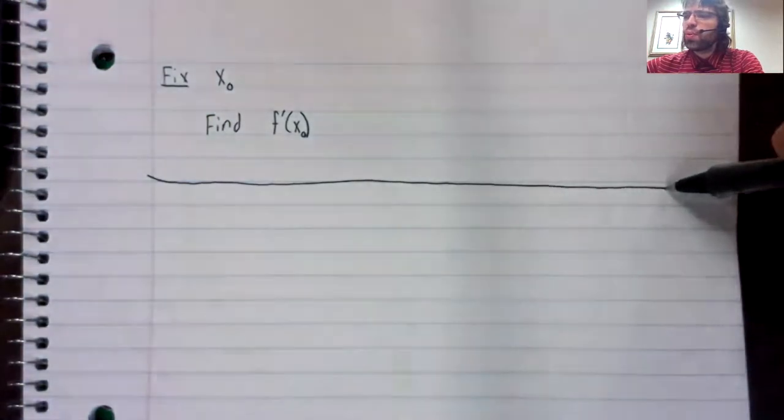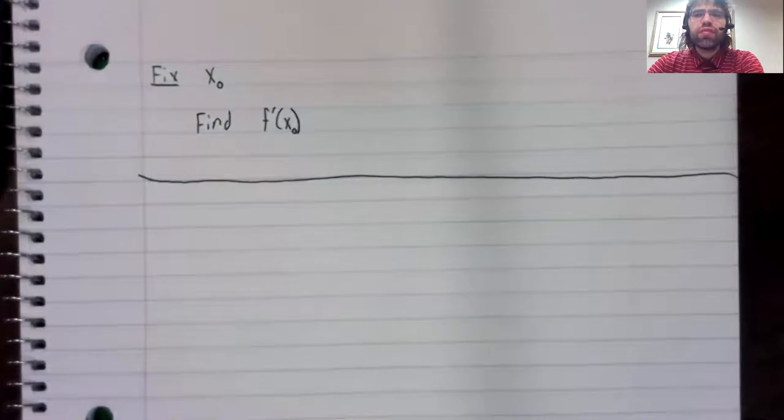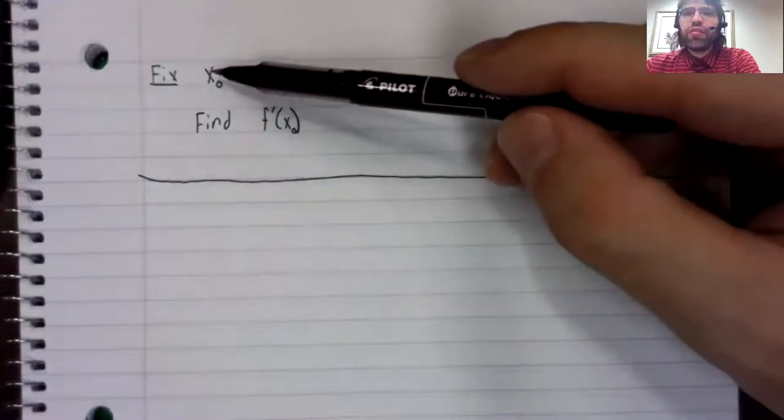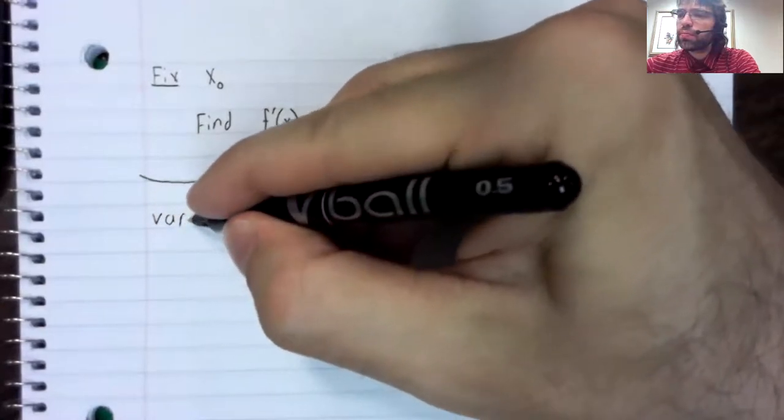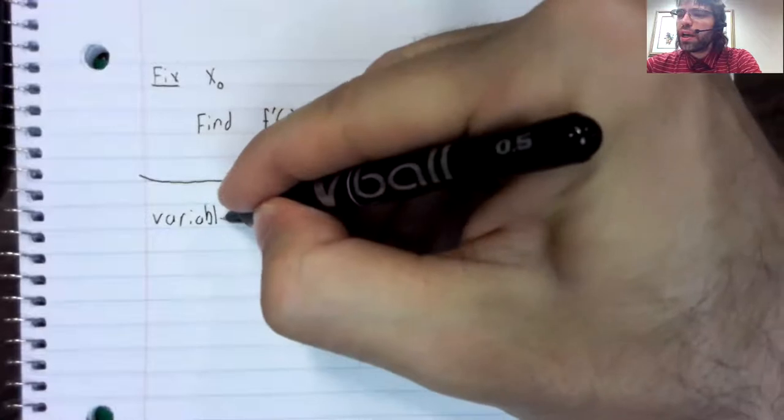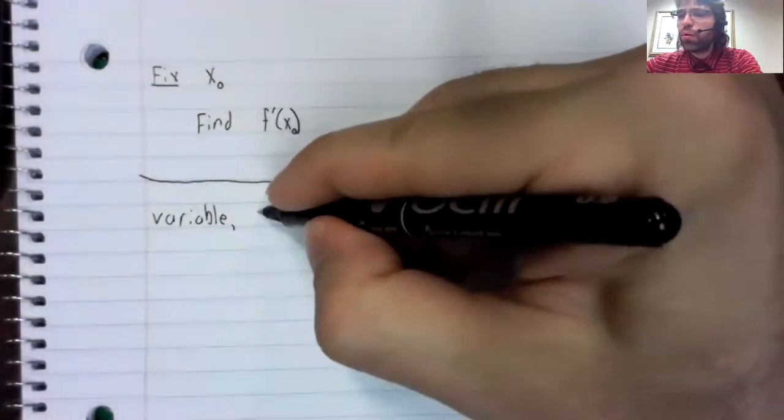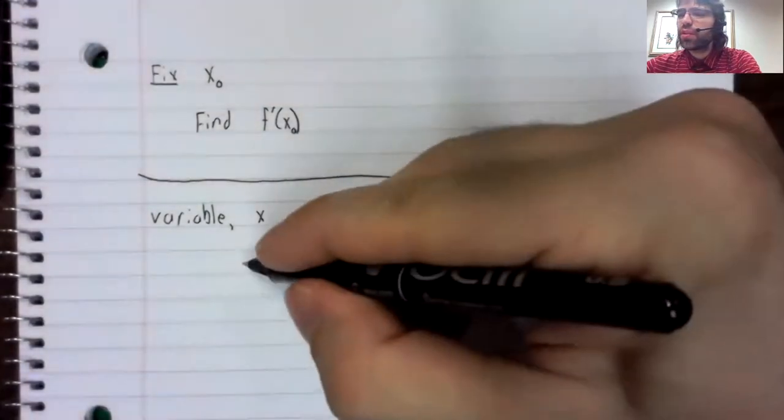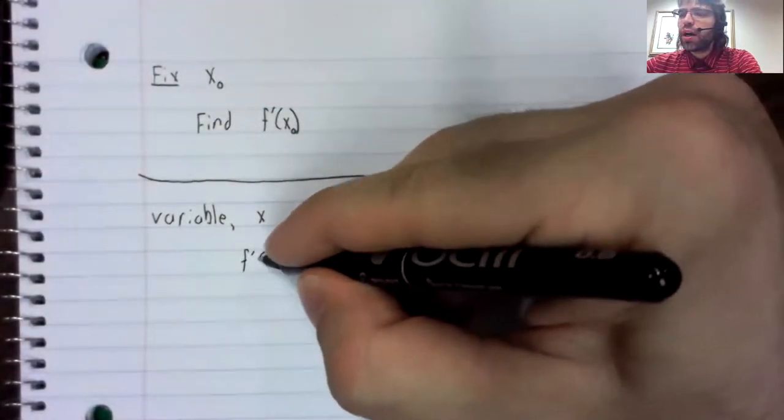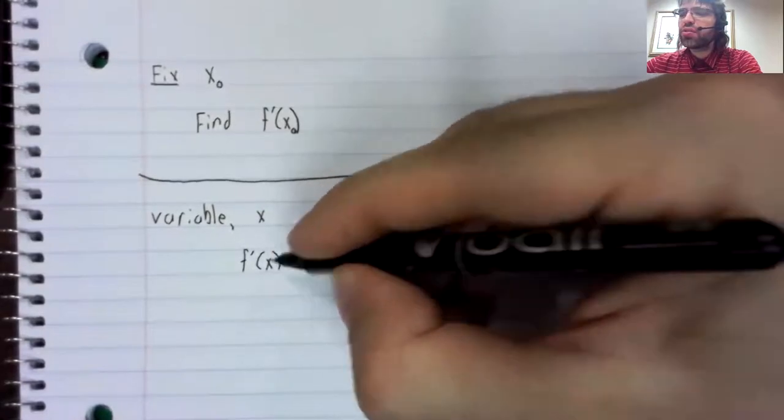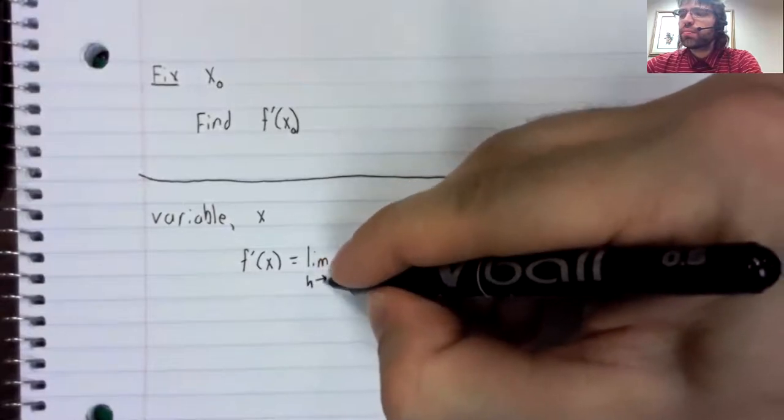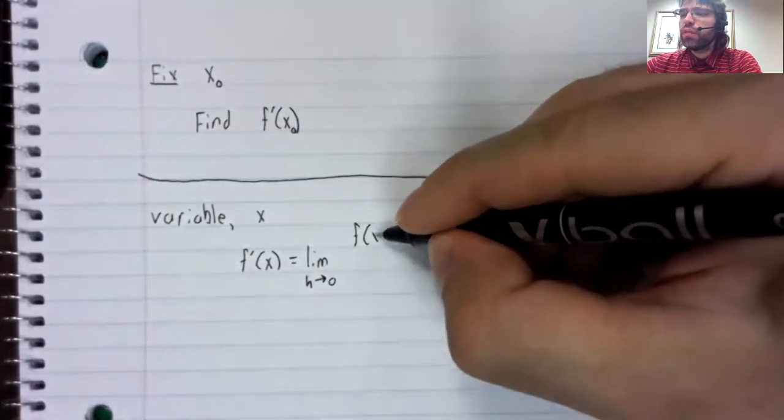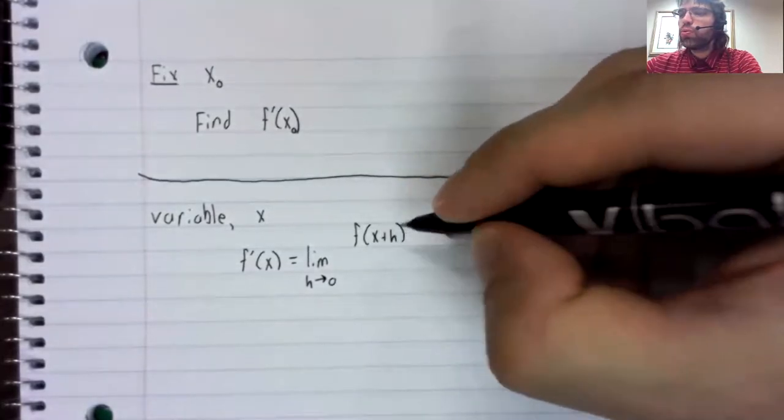The conceptual leap we're going to make is to think of the derivative as a function. Instead of a fixed x sub zero, we'll have a variable x. And we'll define f prime of x, it will still be the limit as h approaches zero of this quotient.